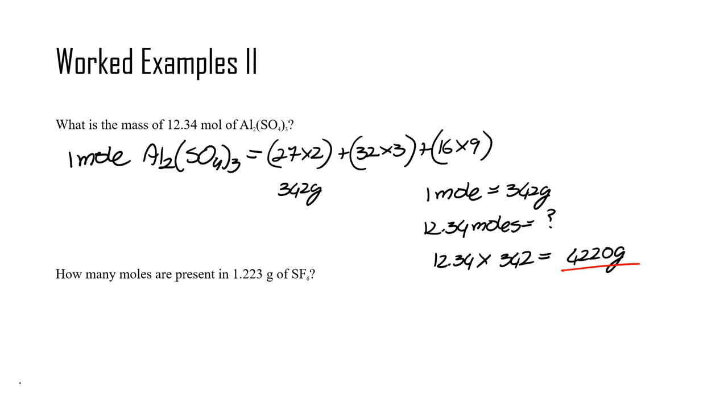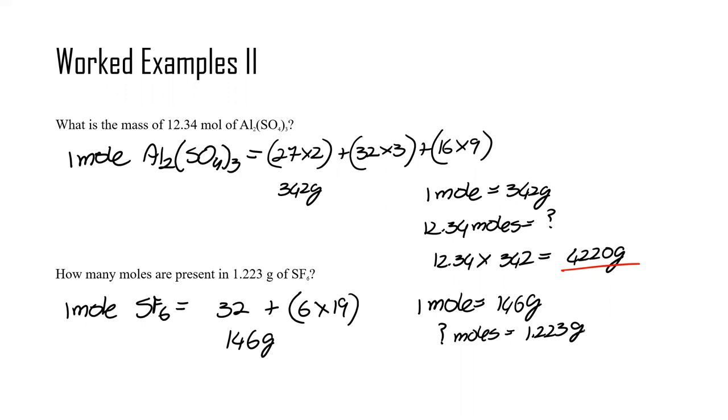For sulfur hexafluoride, the question is, how many moles are present in 1.223 grams of sulfur hexafluoride? And here we need to find, first we need to find the mass of 1 mole of sulfur hexafluoride. So 1 mole SF6 is equal to 1 sulfur, which is 32 grams, plus 6 fluorines, which is 19. And this is equal to 146 grams. So here we would have 1 mole equal 146 grams. How many moles equals 1.223 grams? And here you're going to have 1.223 grams divided by 146 grams, which is equivalent to 0.00838 moles.